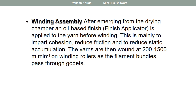Before winding, spin finish is applied onto the filament coming out of the dry spinning system, as also discussed for melt spinning. The spin finish provides three key functions: lubrication, cohesion, and anti-static properties. The winding speed in dry spinning systems is in the range of 200 to 1500 meters per minute.